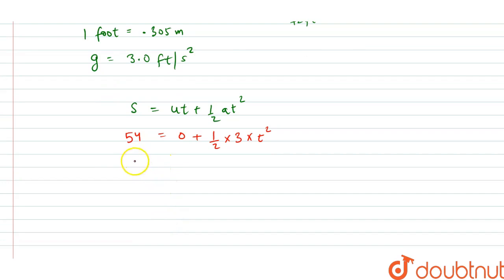after solving this, we get the value of t. That is 54 multiplied by 2 upon 3 is equal to t². So this will cancel to 18, so t² will be equal to 36, and t is